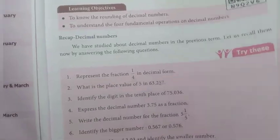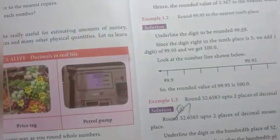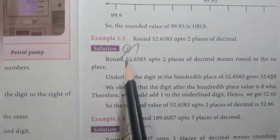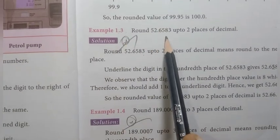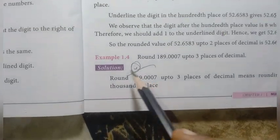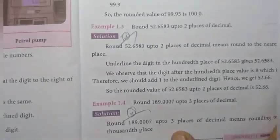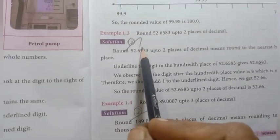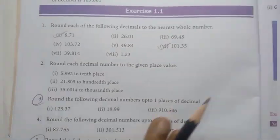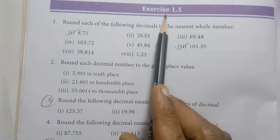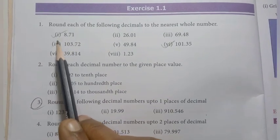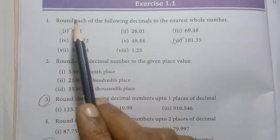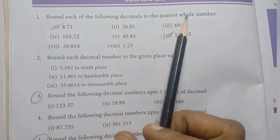So this is the Number System. Page number 3, examples 1.3 and 1.4. Next, page number 4, exercise 1.1 — previous year 3rd midterm test question. Round each of the following decimals to the nearest whole number.